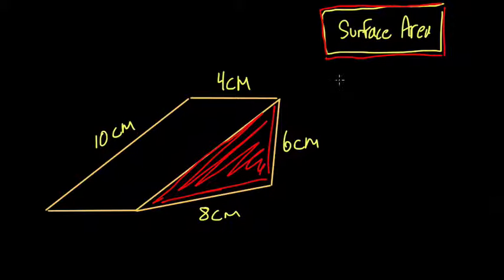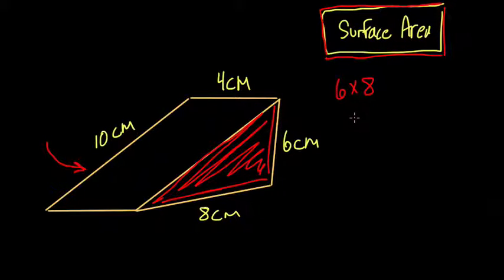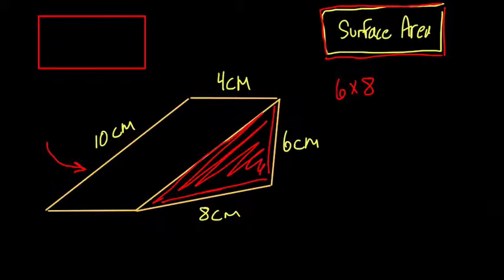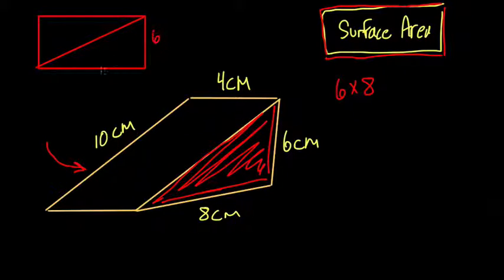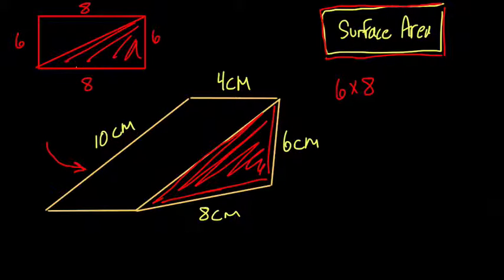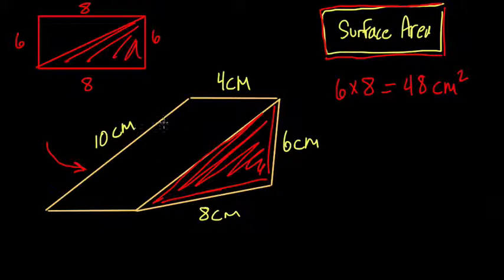Here's one triangle — it's a face, it's 6 by 8. To find the area of a triangle, you multiply 6 by 8 and then divide by 2. But there's another triangle on this side of equal area, so since we're going to do that twice, we can think of those two triangles as making a 6 by 8 rectangle. If I have a 6 by 8 rectangle, that can be broken down into two 6 by 8 triangles. So instead of taking each and dividing by 2, I can just find the area of the rectangle: 6 by 8, which is 48 square centimeters.